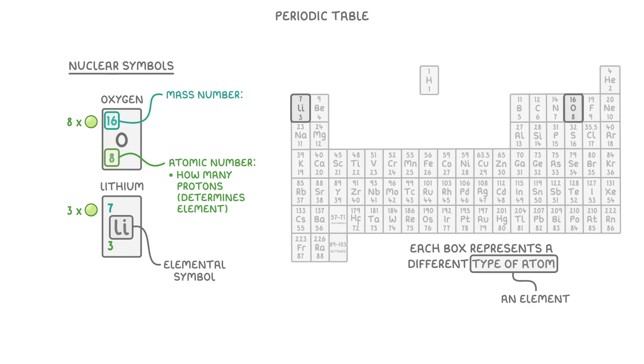Lastly, in the top left we have the mass number, which tells us the total number of neutrons and protons in that atom. So if we wanted to find out how many neutrons oxygen has, we would do the mass number minus the atomic number, which in this case would be 16 minus 8, so it has 8 neutrons.